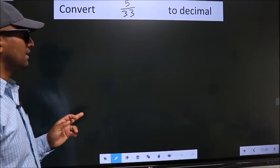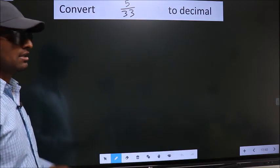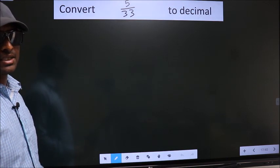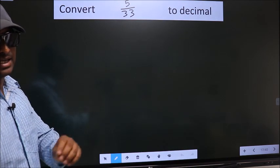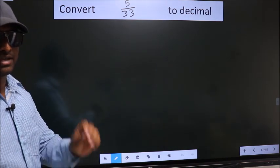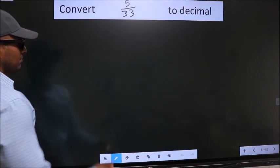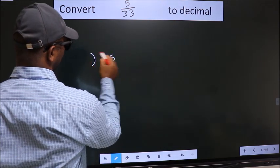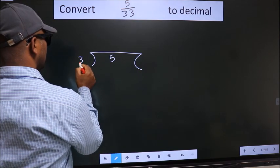Convert 5 by 33 to decimal. To convert this to decimal, we have to divide. And to divide, we should frame it in this way: 5 here, 33 here.